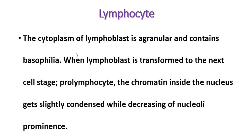Most of the cytoplasm is occupied by the nucleus. The cytoplasm of the lymphoblast is agranular and contains basophilia. When the lymphoblast transitions to the next cell stage, the prolymphocyte, the chromatin inside the nucleus becomes slightly condensed and nuclear prominence decreases.